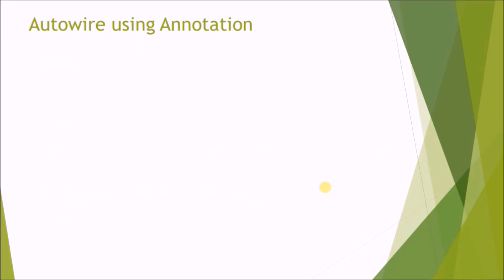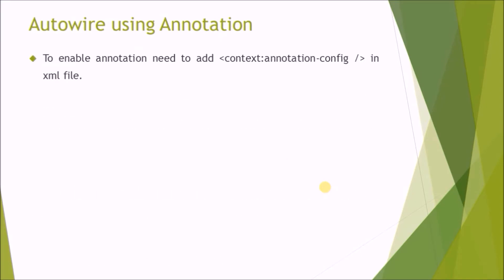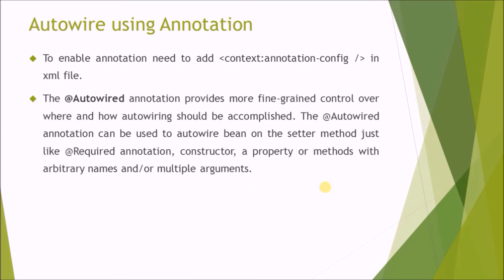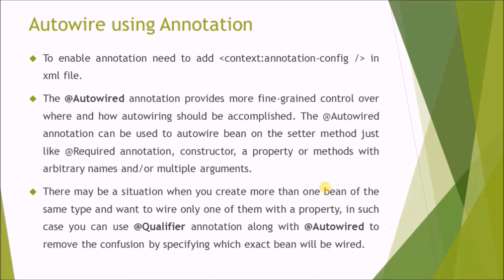Autowire using annotation: to enable annotation, you need to add context annotation-config in the XML file. The @Autowired annotation provides more fine-grained control over where and how the autowiring should be accomplished. It can be used on setter methods, constructors, properties, or methods with arbitrary names and multiple arguments. If you have more than one bean of the same type, you can use the @Qualifier annotation along with @Autowired to specify which exact bean will be wired.